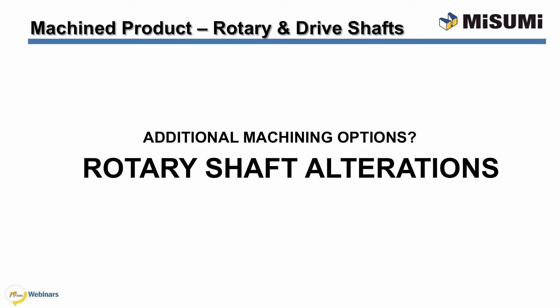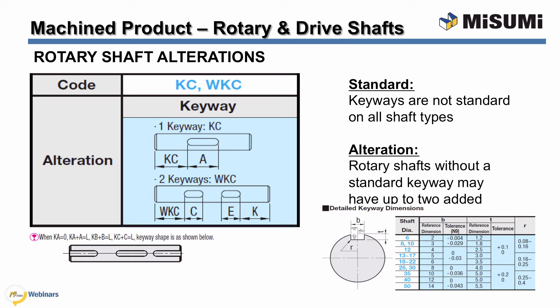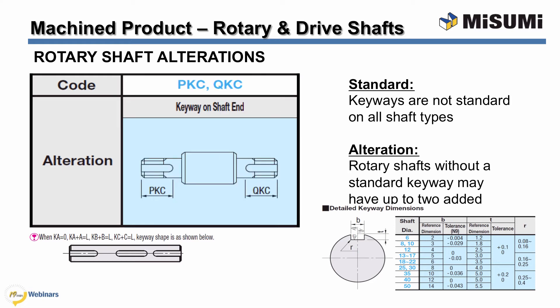Misumi categorizes rotary shaft selections by the different end shapes and features of the shaft, but sometimes multiple features are required, so we offer additional machining alterations to further configure your shaft. A very common feature added to rotary shafts is one or two keyways, used in combination with a key to prevent relative rotation between two components and allow torque transmission. The location and length of the keyway can be configured in 1 millimeter increments anywhere along the length of the shaft but cannot run the entire length. Keyways are machined to an N9 tolerance and dimensions follow GIS standards. You can also get keyways on the stepped ends of shafts.